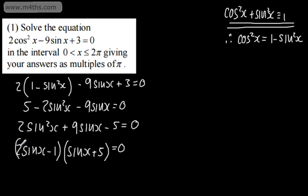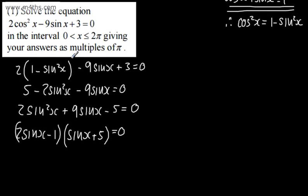Let's check that works: 2sin²x + 10sinx - sinx - 5 = 0. Yes, that works nicely. There's a hint in the question that this will work out nicely since we're giving answers as multiples of π — that means they're going to be our special angles.